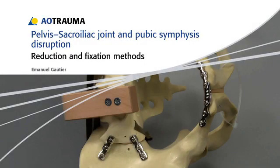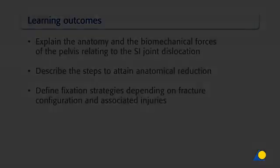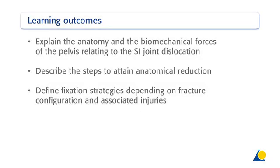Sacro-iliac joint and pubic symphysis disruption: reduction and fixation methods. Following this exercise, you should be able to explain the anatomy and the biomechanical forces of the pelvis relating to SI joint dislocations, and to describe the steps to attain anatomical reduction and define fixation strategies depending on fracture configuration and associated injuries.